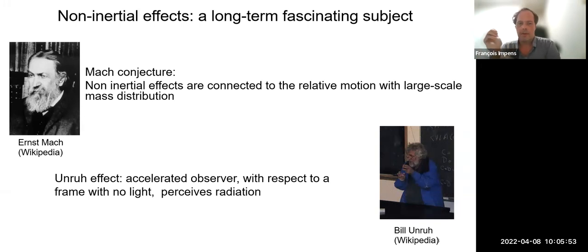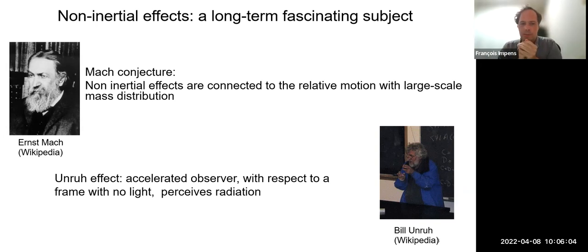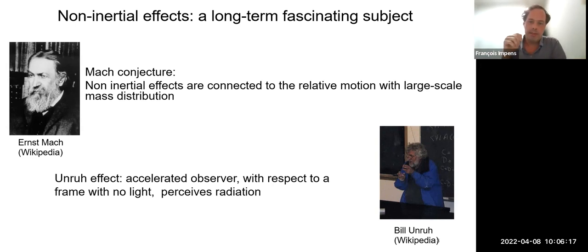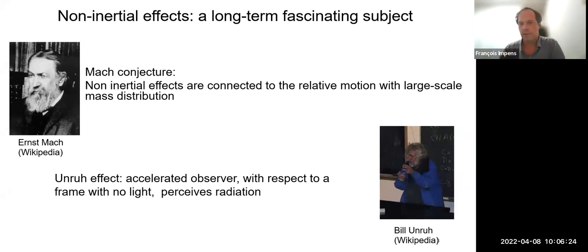More recently, in connection with quantum vacuum physics, there is a very interesting effect predicted by Unruh in the 70s, which now bears his name. If you have a frame with no light, no photons, no radiation, and you put an observer in this frame — if the observer accelerates, it will perceive the presence of radiation. In other words, the quantum vacuum is not invariant under acceleration. This is an example of the connection between non-inertiality and quantum vacuum physics.